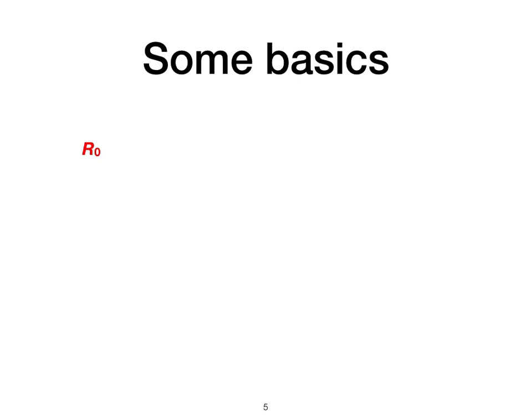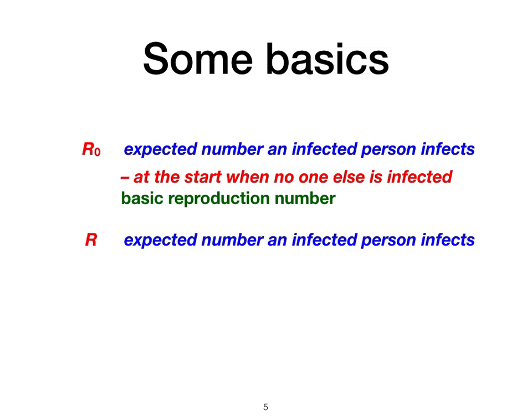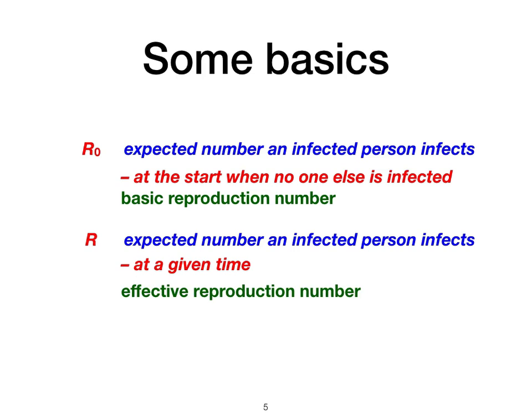On to some basics. Maybe you've heard of the magic number R0 — that is the average number of new infections you'd expect from one infection, not counting any secondary ones from the new ones that get infected. That applies at the start when no one else is infected, and it's called the basic reproduction number. This is often confused with plain R, no zero subscript, which is also the average number of new infections from a particular infection, but at a given time as the disease is progressing. You expect R to reduce as you start running out of new people to infect, and that's called the effective reproduction number.